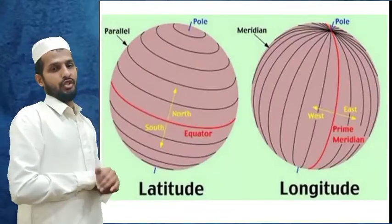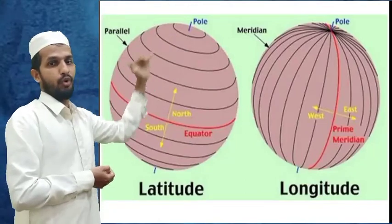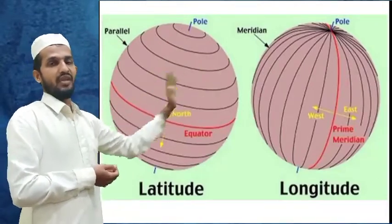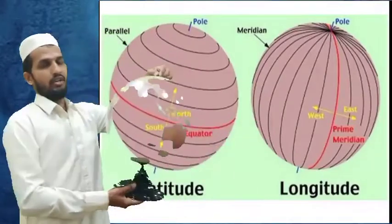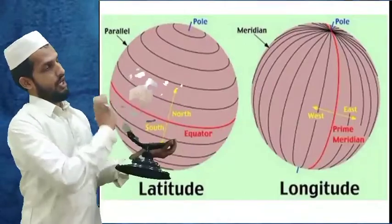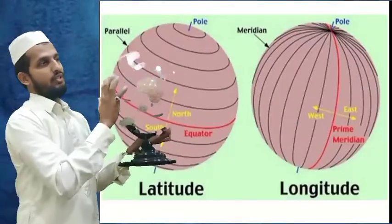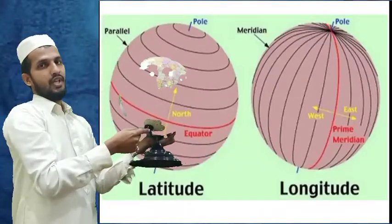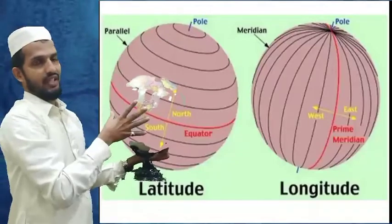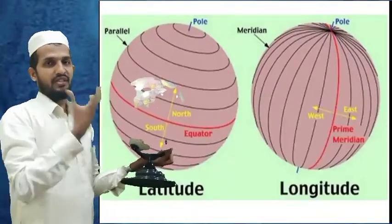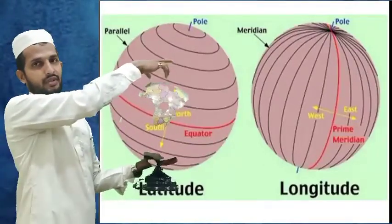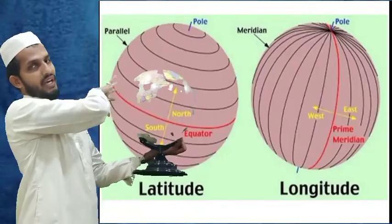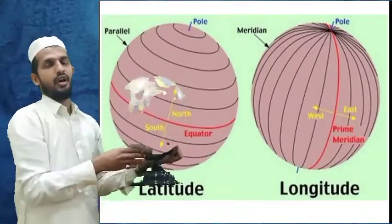Latitude runs north and south. Next one is longitude. Longitude runs from pole to pole — south pole to north pole. The prime meridian is the red line. This is a globe; you can see so many lines rounding it — this routing is called longitude. So many lines from north pole to south pole — this is called longitude. The upper part of the globe is north, the lower part is south, the front area is called west, and the other side is east.